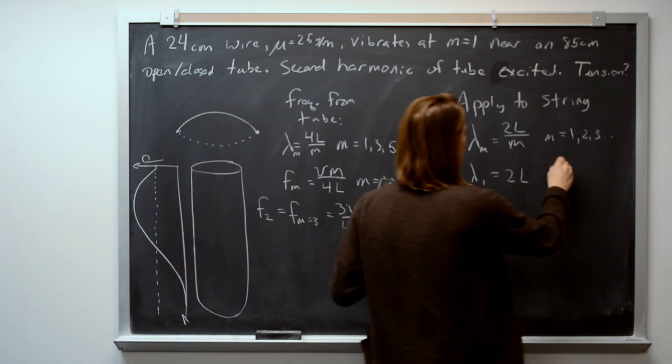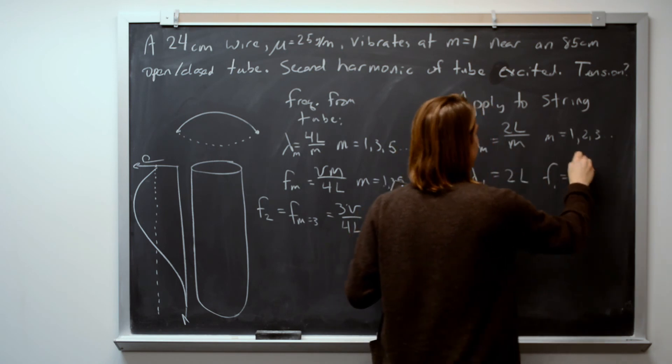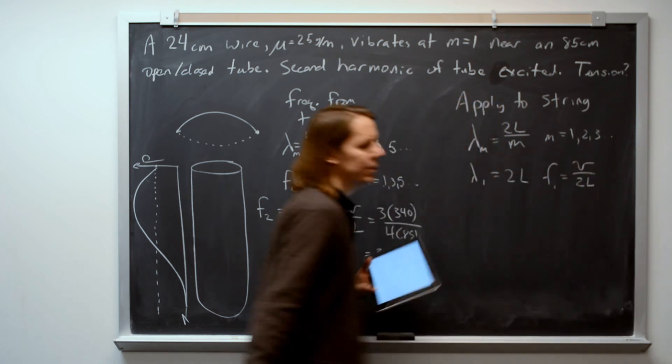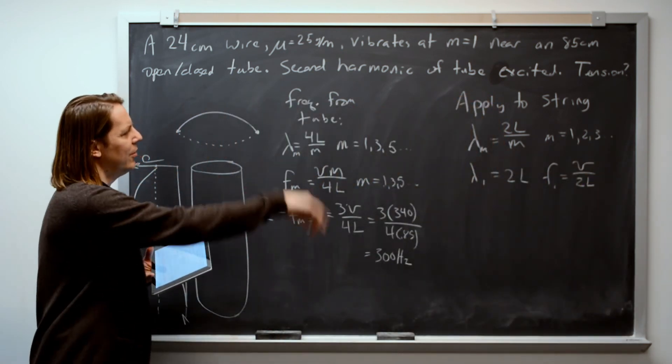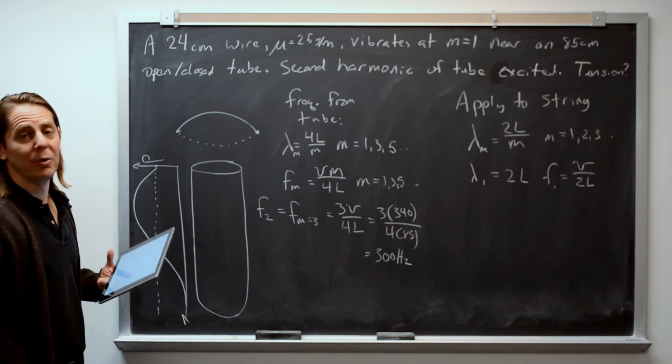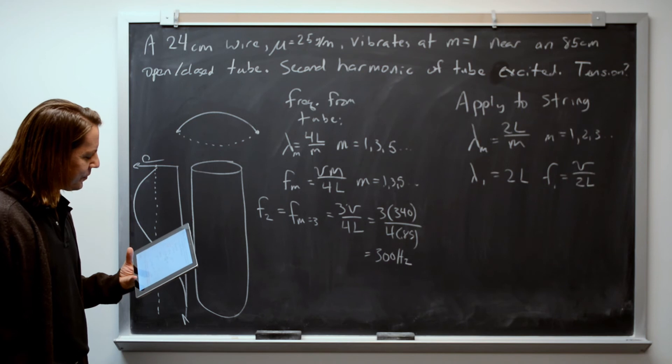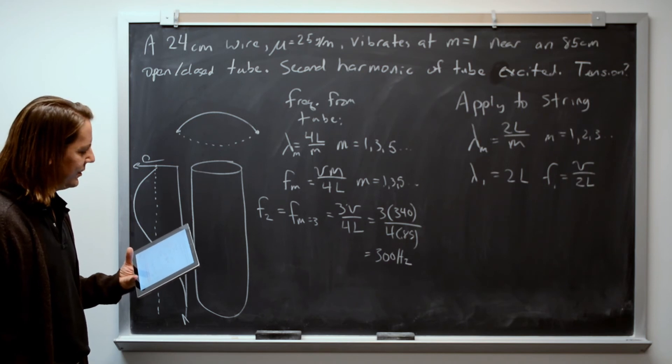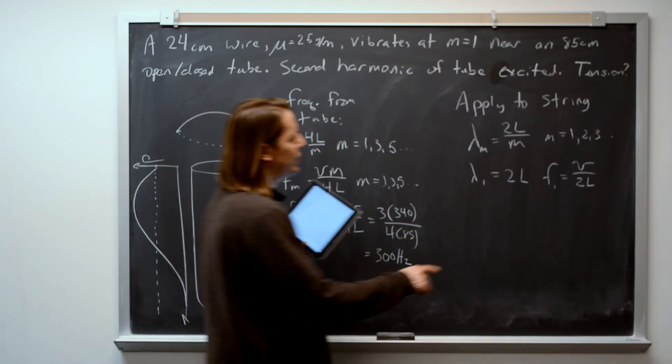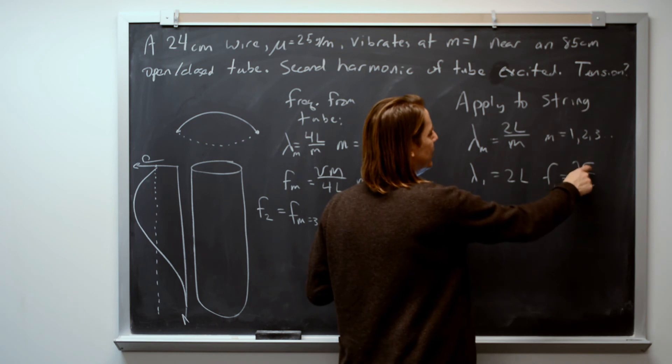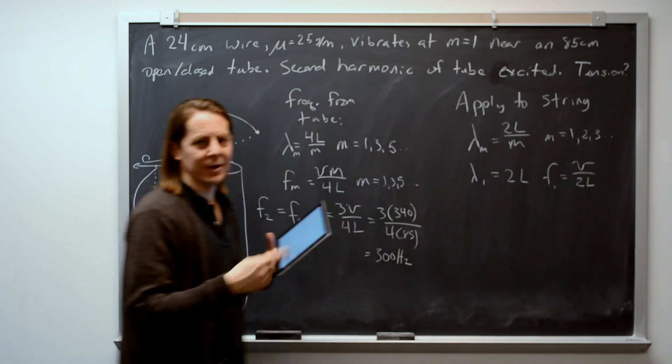Therefore, we also know that F1, the frequency is just V over 2L. So we know all that stuff. Well, we know L. We don't know V. That's what we're sort of working towards here. So what we want to do is say, yeah, here we go. So we know the frequency, we know L, we need V, because V is how we're going to get the tension.